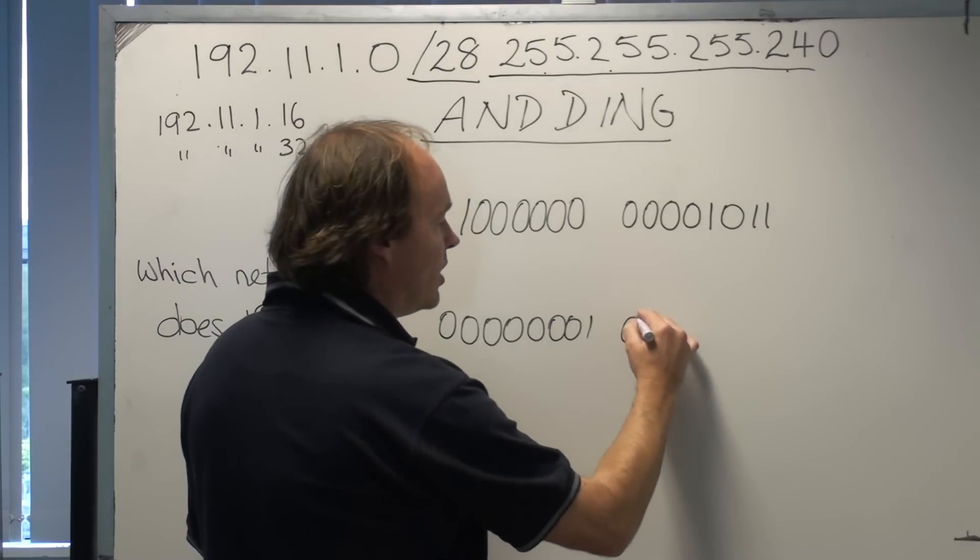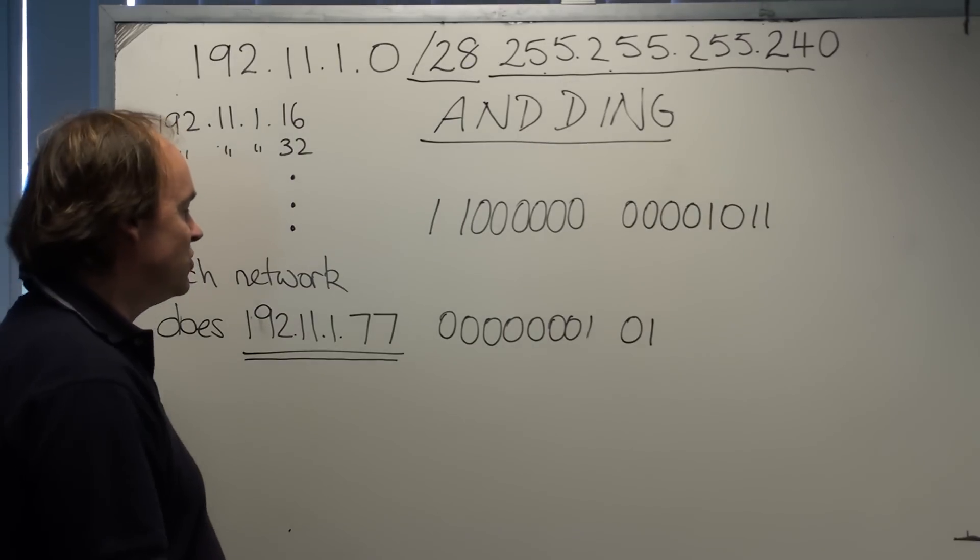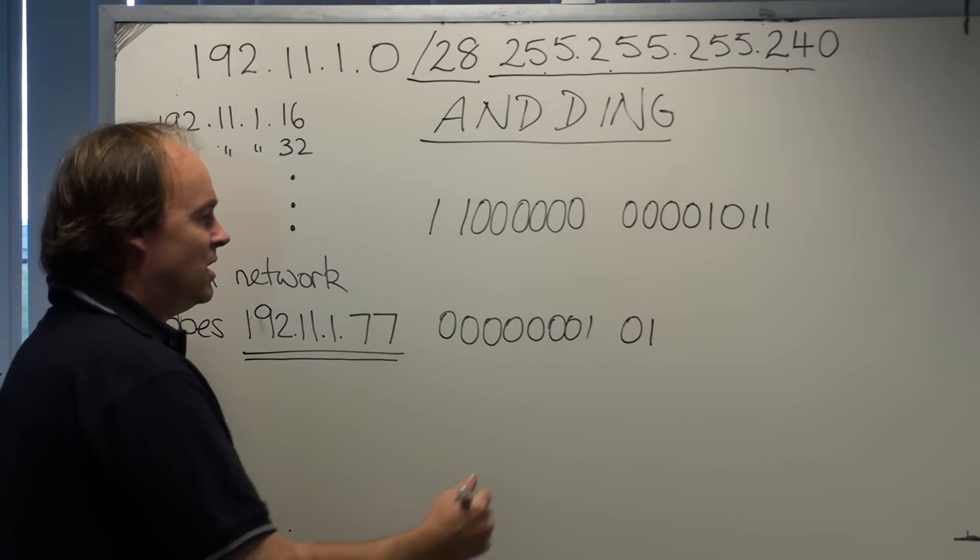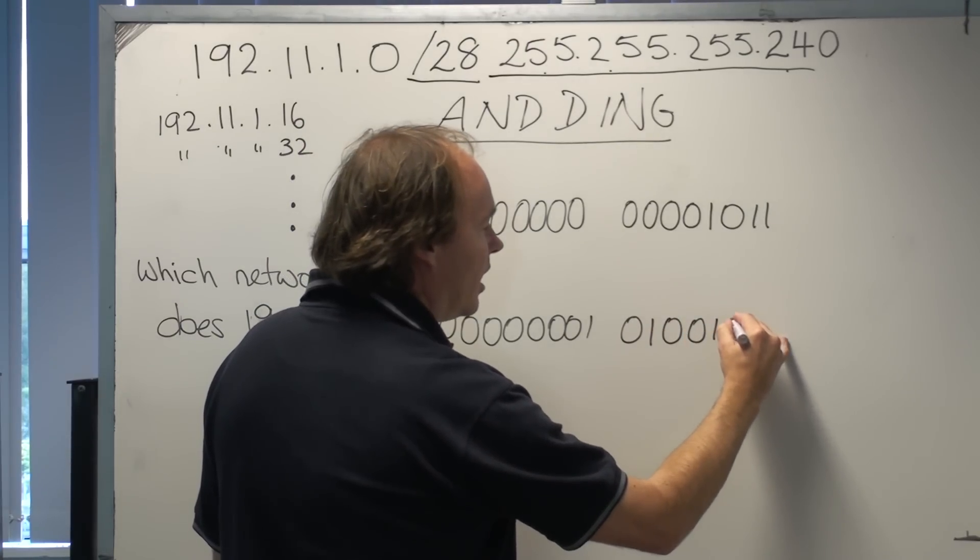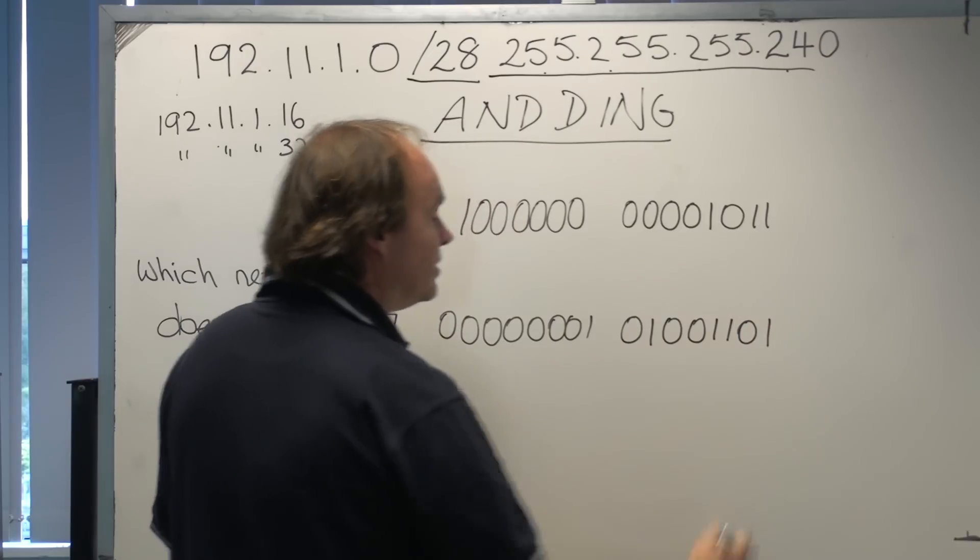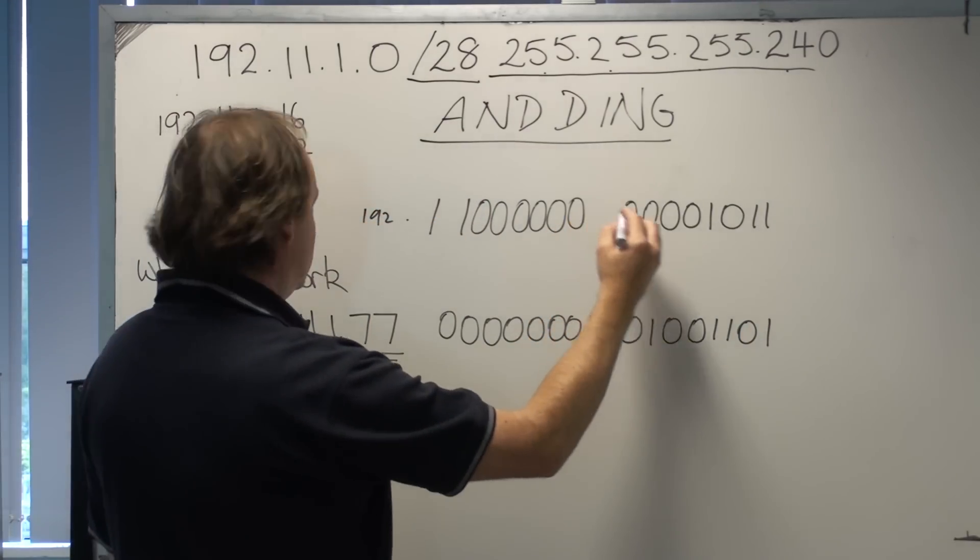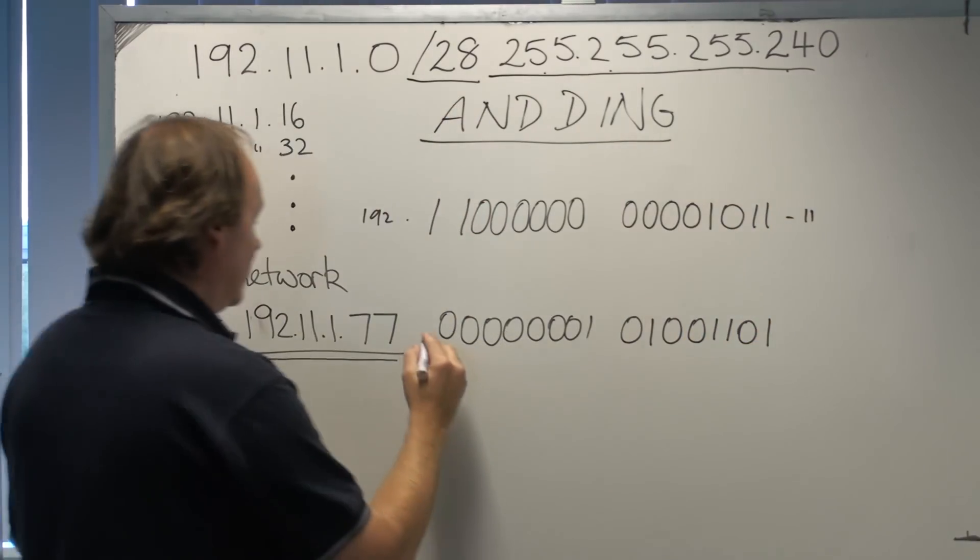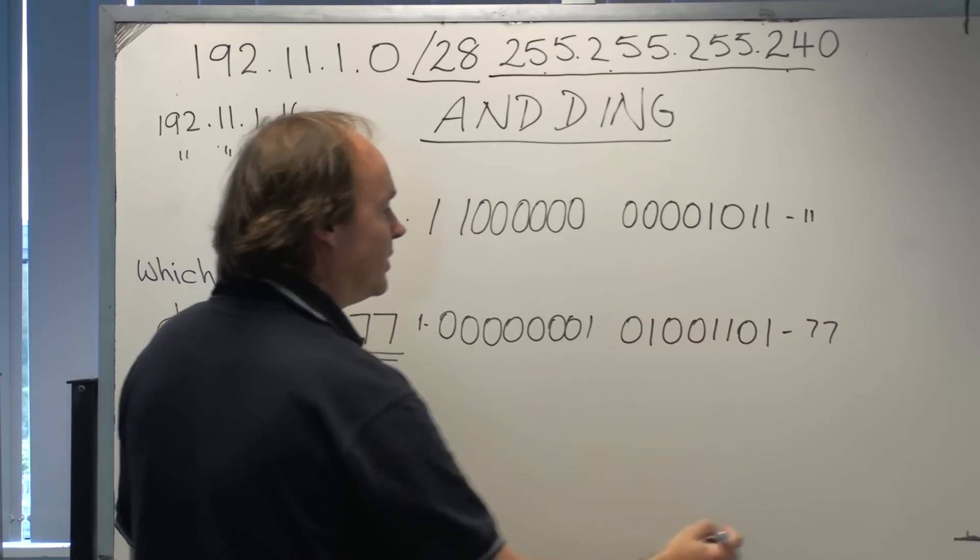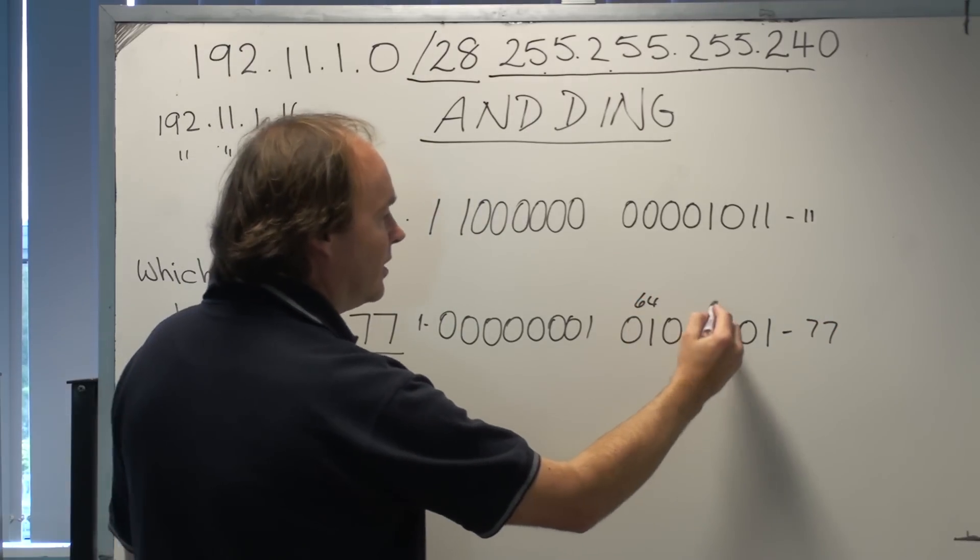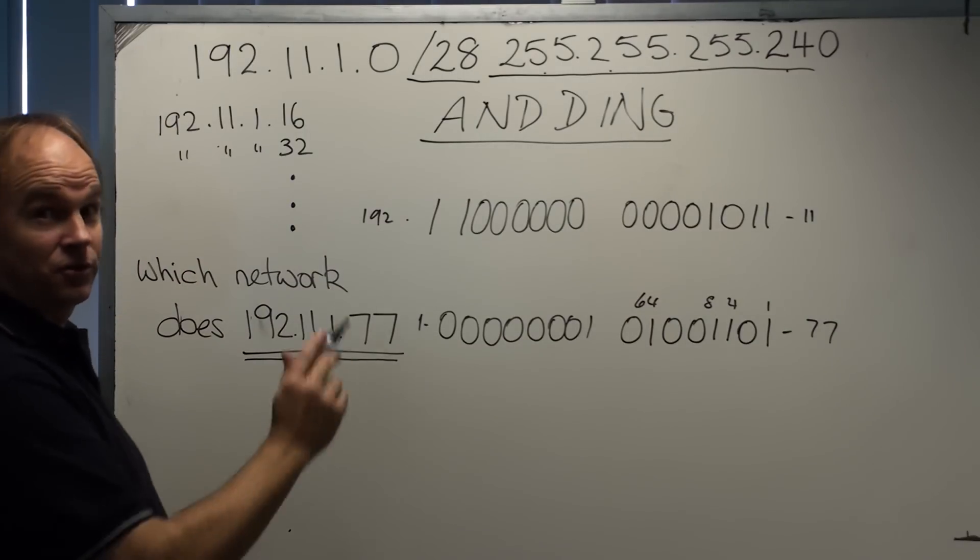And 77: there's no 128s, there's a 64, and we have 6 and 7 to go which is 13. So we need an 8, a 4, no 2s, no 1. So that gives us the value here of 192, this is 11, this is obviously 1, and this is obviously 77: 64, an 8, a 4 and a 1, if my math is correct.